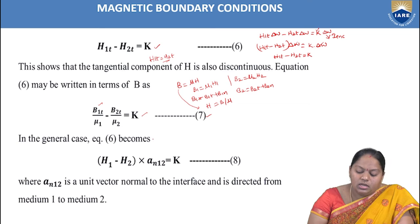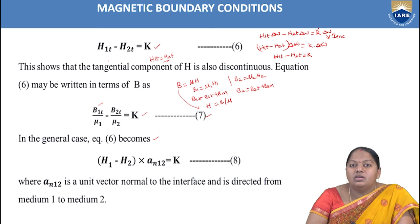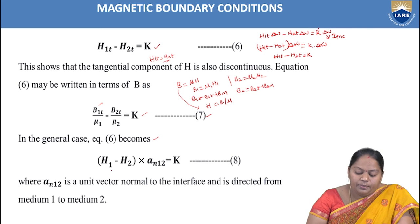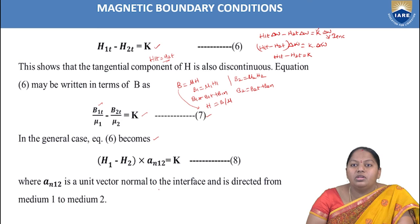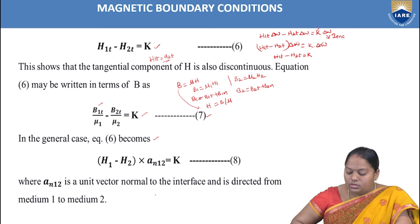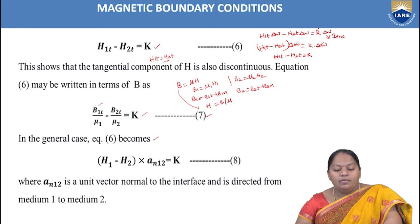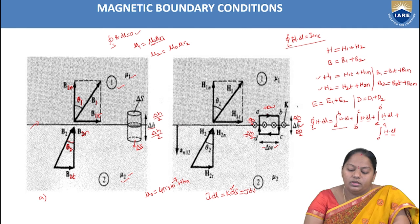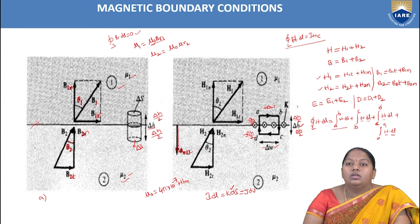In general, the magnetic field intensity is a vector, and the boundary condition can be expressed as H1 − H2 dotted with an12 = K, where an12 is the unit vector normal to the interface directed from medium 1 to medium 2.